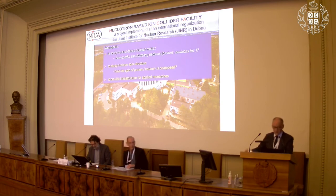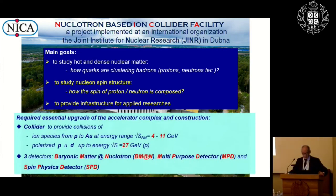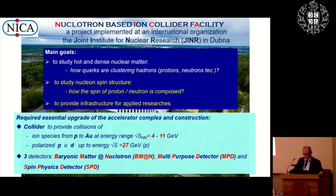The main goals are to study hot and dense nuclear matter — for example, how quarks and gluons are clustering in hadrons such as protons and neutrons — and to study nuclear spin structure, specifically how the spin of protons and neutrons is composed of quarks and gluons. To reach these goals, it was necessary to upgrade the existing accelerator facility and construct a collider for ion species from proton to gold at energies up to 11 GeV, and polarized protons and neutrons up to 27 GeV in the center of mass. Three detectors are planned: BM@N at the Nuclotron for fixed-target experiments, the Multipurpose Detector (MPD), and the Spin Physics Detector (SPD), both installed at the collider interaction points.